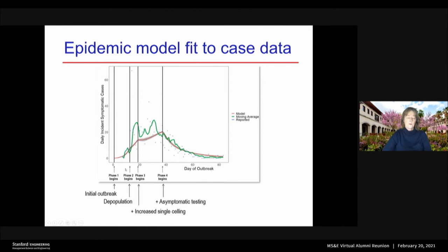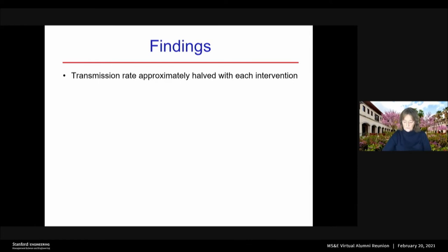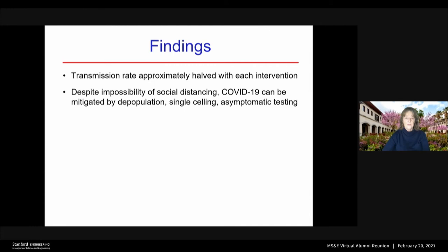Giovanni fit an epidemic model to this data across the four phases. The dots in this picture are the daily incident symptomatic cases the jail gave us data on — quite variable. He made a five-day moving average and for each of the four phases, he fit an epidemic model to the curve. The gray shading is the 95% credible interval. He found out that with each of the interventions, the transmission rate was approximately halved. And despite the impossibility of social distancing in a jail, COVID-19 can be mitigated by depopulation, single-celling, and asymptomatic testing.